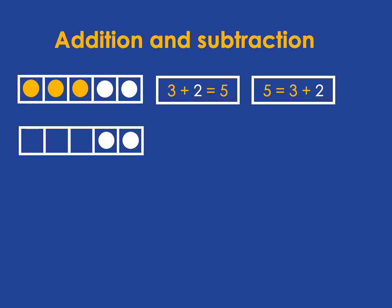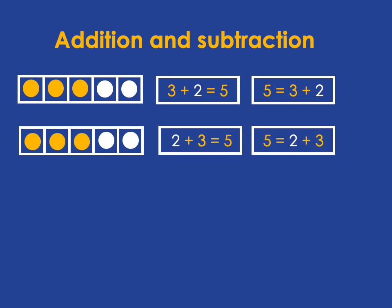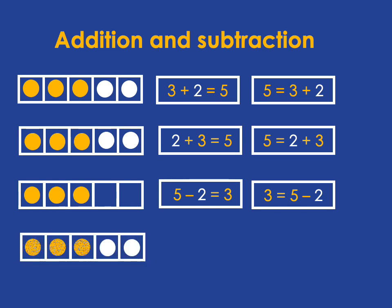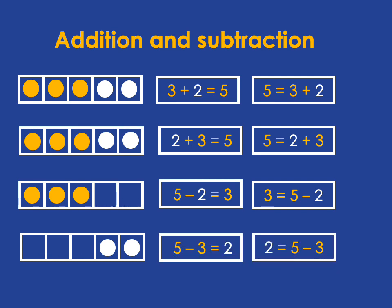We can also see that 2 plus 3 is 5, which we'll write like this. And we can also see that if we start with 5 and then we take away 2, we'll end up with 3, so 5 subtract 2 is 3. We can also see if we start with 5 and we subtract 3 we get 2, so 5 subtract 3 is 2.